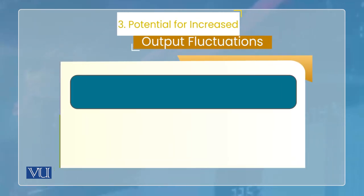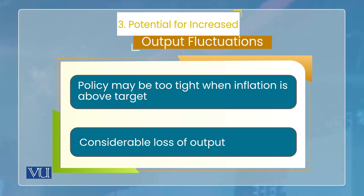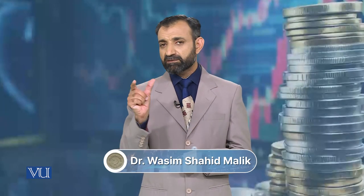The third disadvantage of the inflation targeting regime is that there is potential for increased output fluctuation. The medium-term target is price stability, but the cost of inflation targeting is increased output fluctuation.